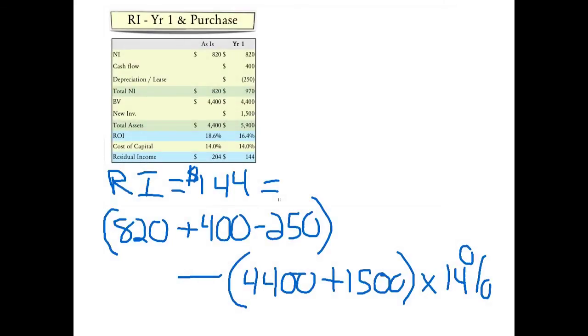Let's now consider the residual income if the new project is accepted. We start off with the net income as is, add the additional cash flow, subtract out the depreciation, which are assumed to be the only accrued expenses, and subtract from this the new net amount of the investment, which is $4,400 as originally stated, plus $1,500 added. Multiply all that by 14%, then accomplish the subtraction, and we see the residual income is $144. So, the new investment actually lowers the residual income in the current period.